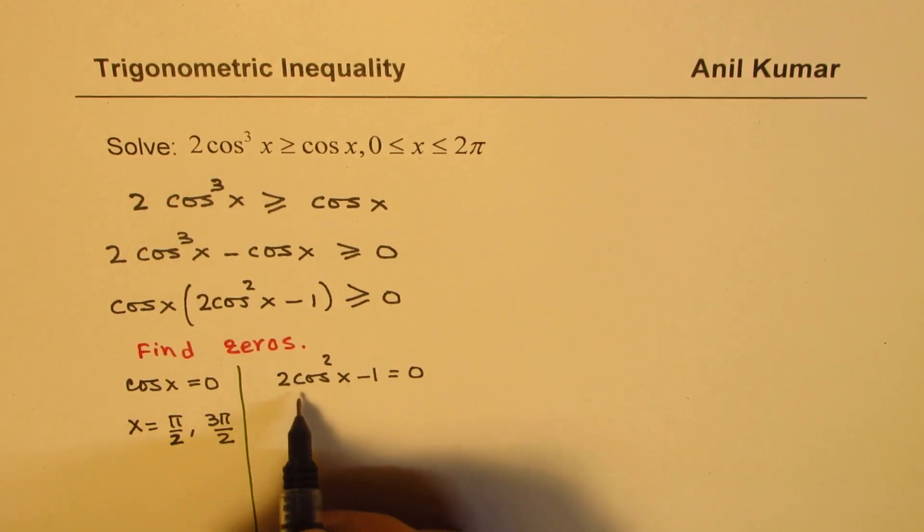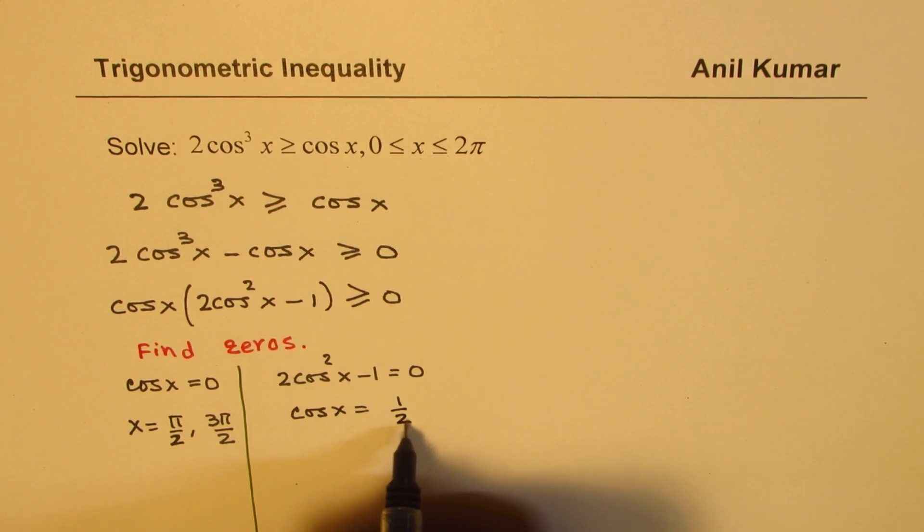Now in this case, we are actually working out for cos x = ±1/√2. So that means there are 4 values.